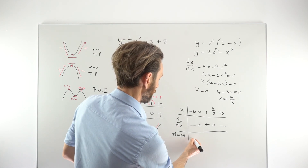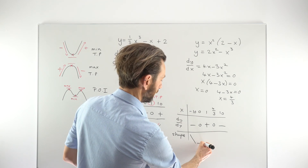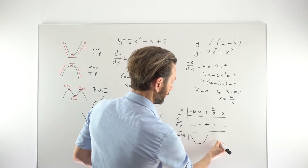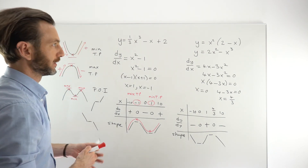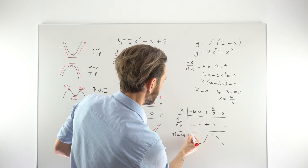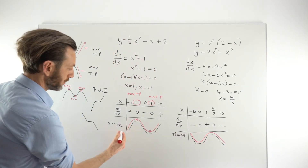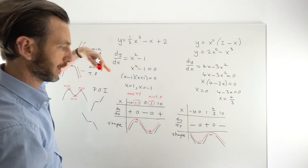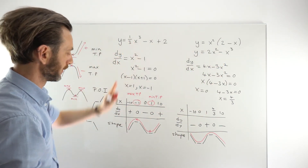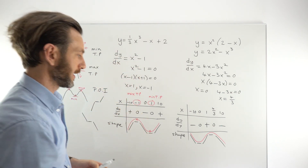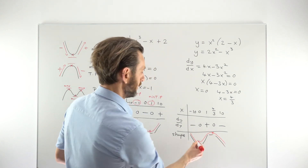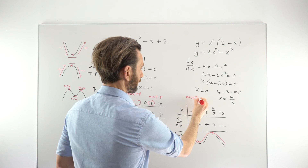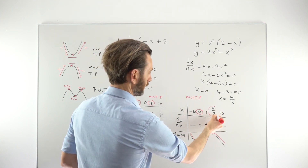So the function's graph slopes down, flattens to zero at the first stationary point, goes up, flattens out again at the second stationary point, then goes back down. This is because the function has a negative x cubed term, so cubics with a negative leading term start by going down. This tells us that the stationary point at x equals 0 is a minimum turning point and the one at x equals 4/3 is a maximum turning point.